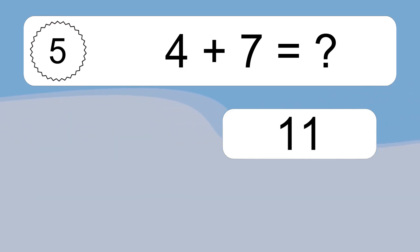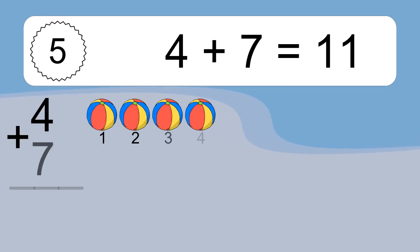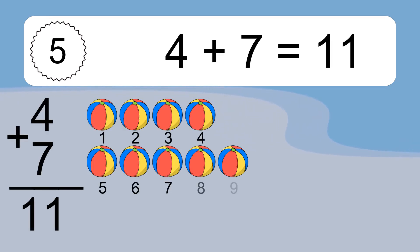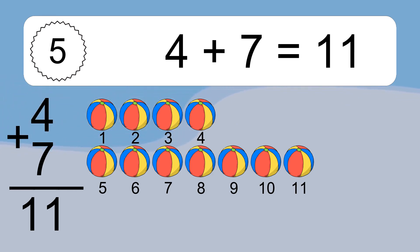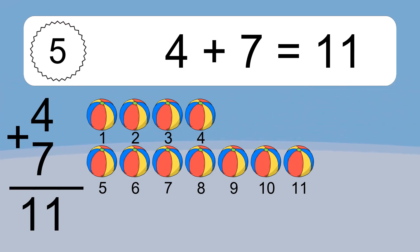4 plus 7 equals 11. Let's count it. 1, 2, 3, 4, 5, 6, 7, 8, 9, 10, 11.